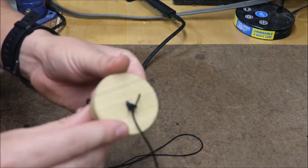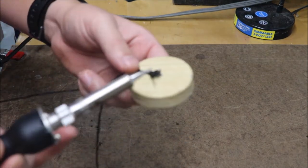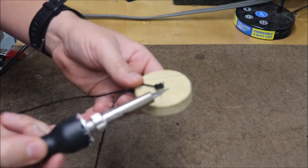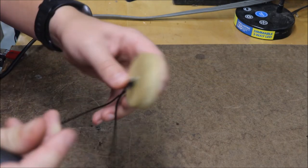Once we're done with that, if you have one of these available, it's optional, but it definitely helps. We're going to take our soldering iron and very carefully touch it to the tip of our string and fuse it.